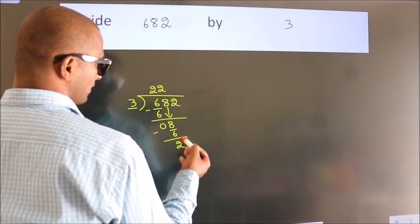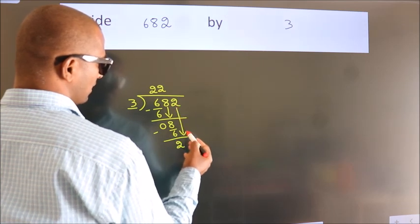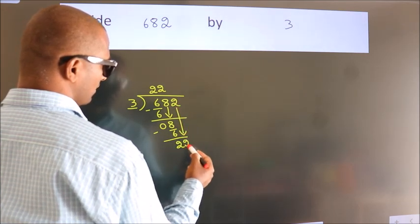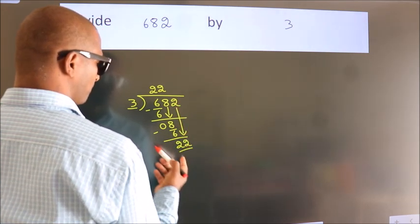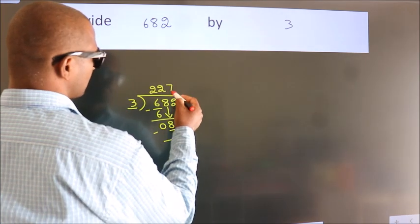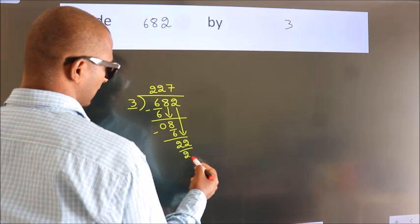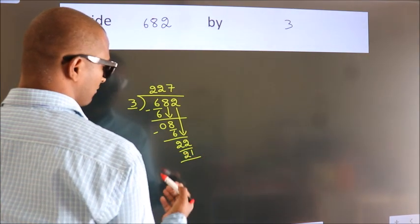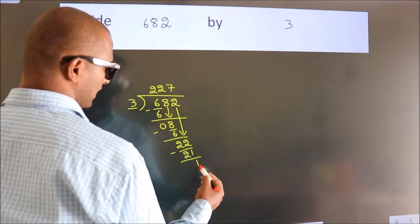After this, bring down the next number. So 2 down, making 22. A number close to 22 in the 3 table is 3 times 7, which is 21. Now we subtract. We get 1.